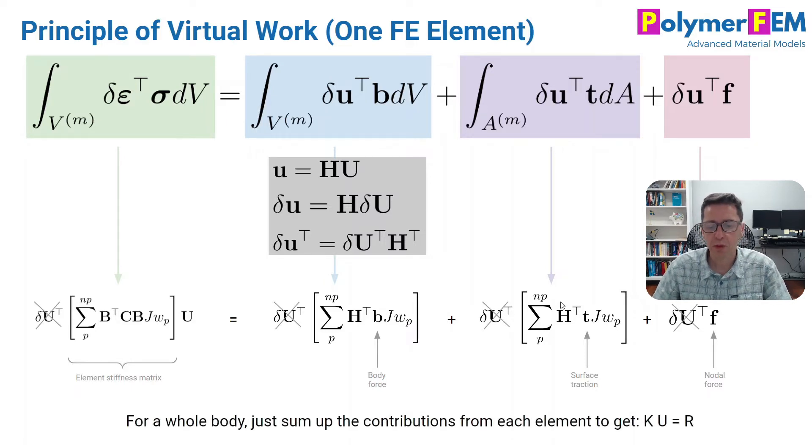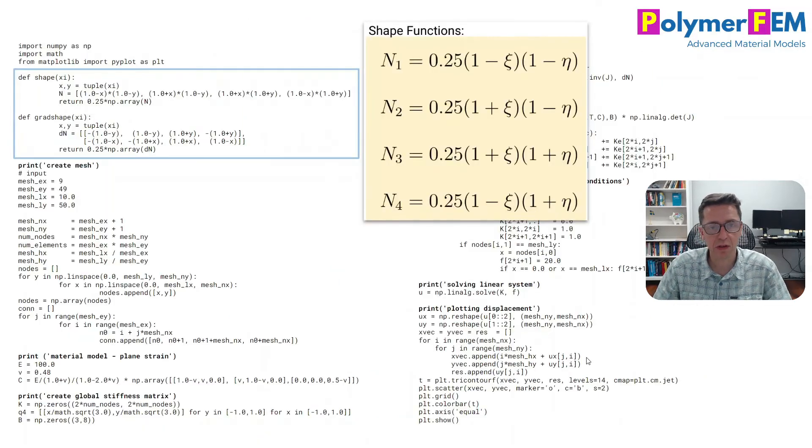So for the whole body we add them all together and we then get the complete equation which is something similar to k, a stiffness times the displacement is equal to the force term. So that's how it works and that is how the finite element method is set up.